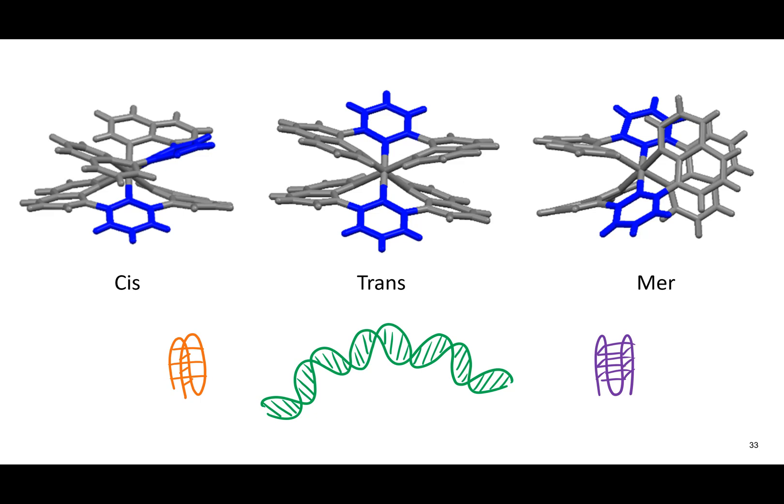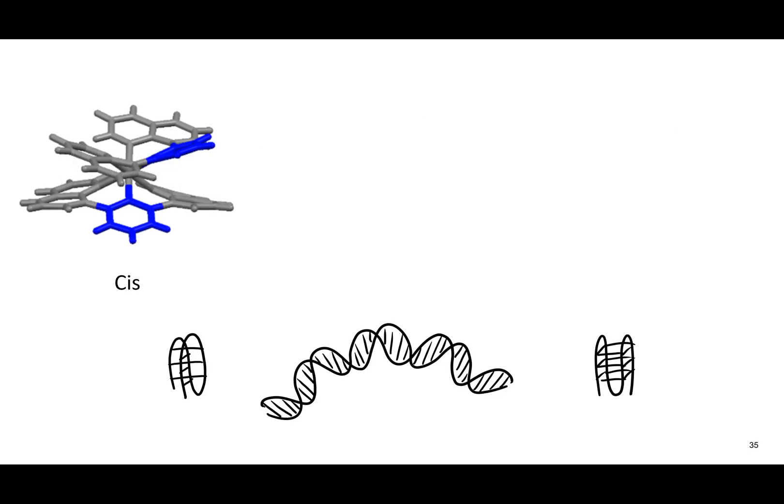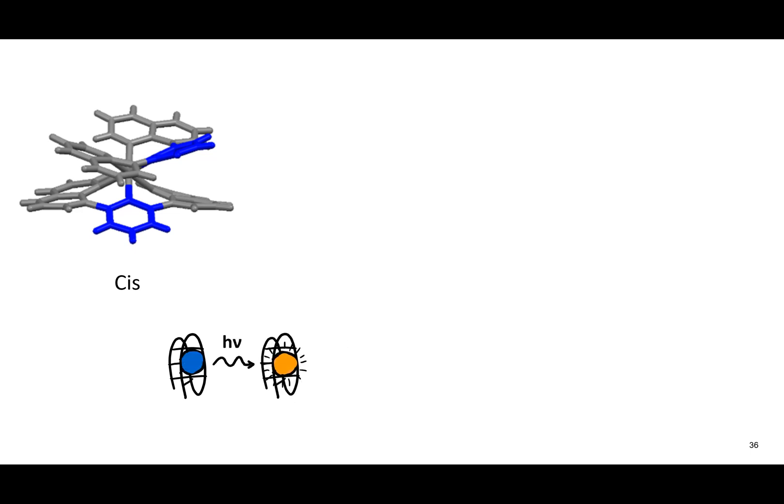What we found was that the cis isomer actually has a special interaction with DNA. When this particular compound binds DNA, it lights up. This phenomenon is called phosphorescence. Phosphorescence is when light is given out by a substance after it has absorbed light. It is similar to fluorescence, but happens over a longer time scale.